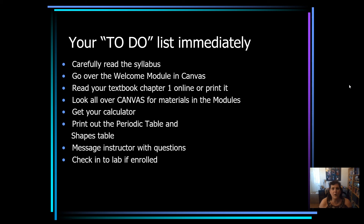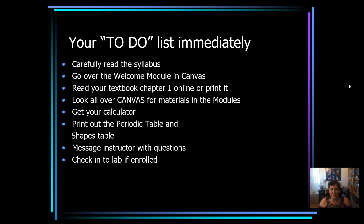Look all over Canvas for all your materials in those modules. Get your calculator. Print out the periodic table and the shapes table — those need to be printed out for sure. Message your instructor with any questions you have. Make sure you go to lab or check into your lab if you're enrolled. Lab is a separate course, by the way, so if you're taking this KEM 130 science course with lab, make sure you've enrolled in the lab to attend and get your credit.